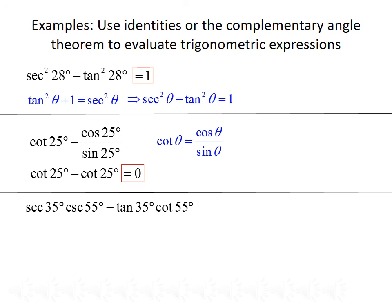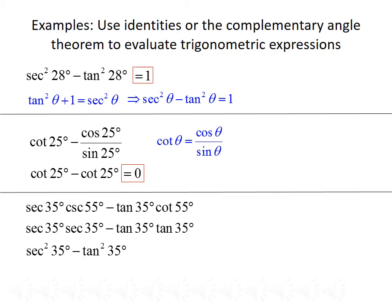For the last example, consider secant of 35 times cosecant of 55 minus tangent of 35 times cotangent of 55. Notice that 35 degrees and 55 degrees add up to 90 degrees, so they are complementary angles. We can use the complementary angle theorem to rewrite the 55-degree terms: cosecant of 55 is the same as secant of 35, and cotangent of 55 is the same as tangent of 35. So the expression becomes secant squared of 35 degrees minus tangent squared of 35 degrees, which, by the Pythagorean identity, simplifies to 1.